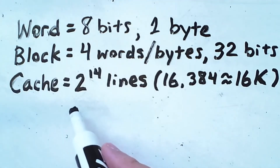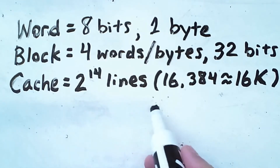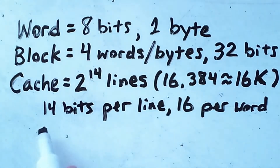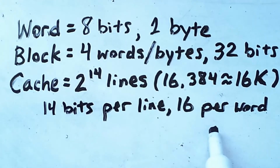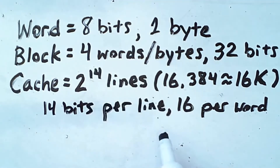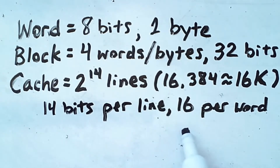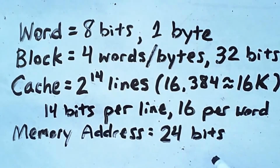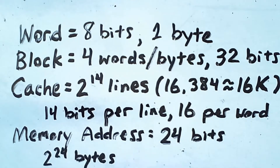Our cache will have 2 to the 14 number of lines — roughly 16,000 lines. It takes 14 bits to refer to any particular line in the cache. To refer to a specific word stored in the cache requires 16 bits, because we have 4 words per block, and it takes 2 bits to represent the values 0, 1, 2, and 3 — adding those 2 to the 14 gives 16 bits per word. Finally, each memory address will consist of 24 bits, meaning memory can store 2 to the 24 bytes, but the cache can only store 2 to the 16 bytes.